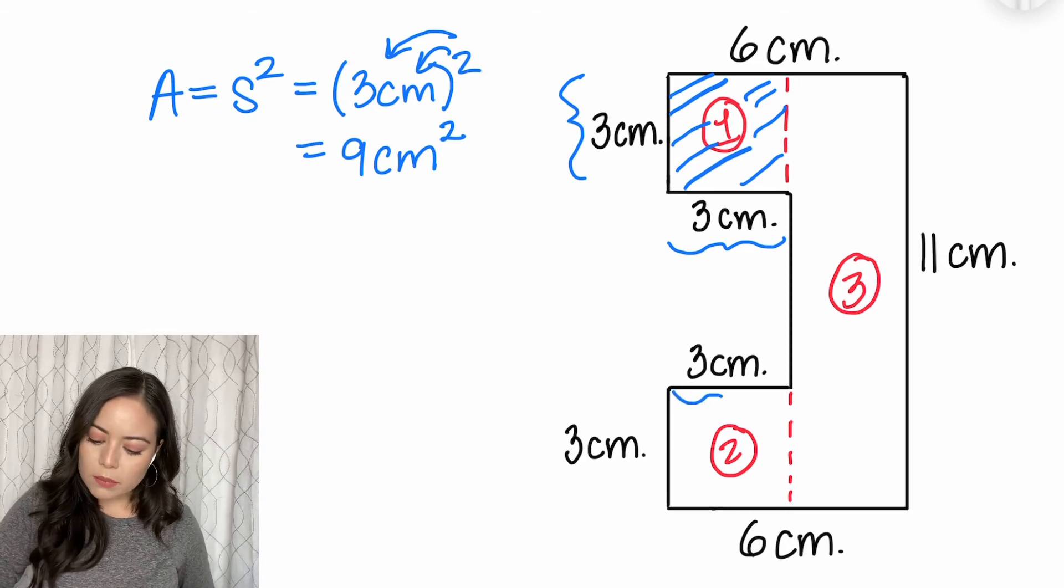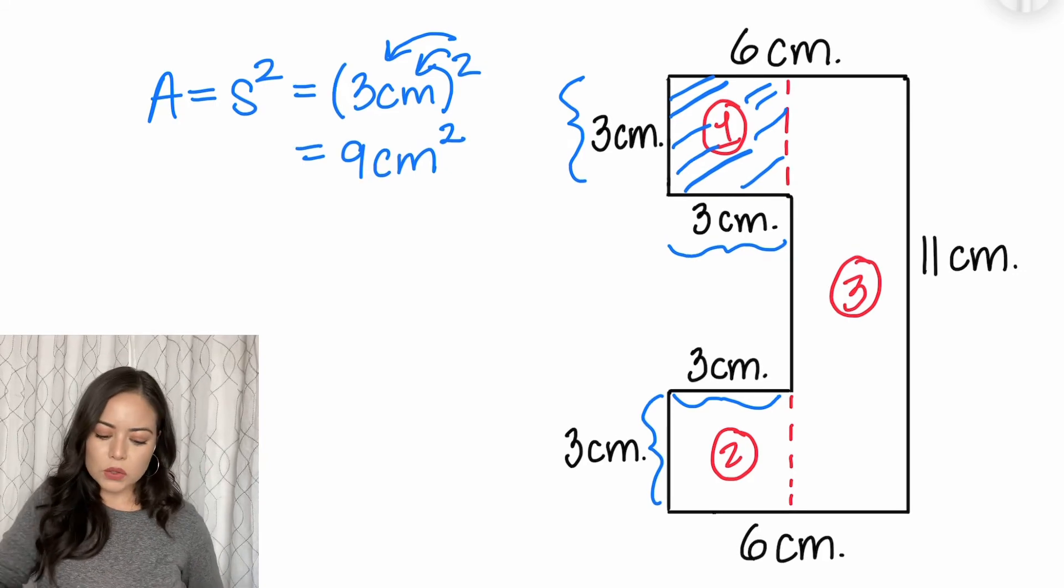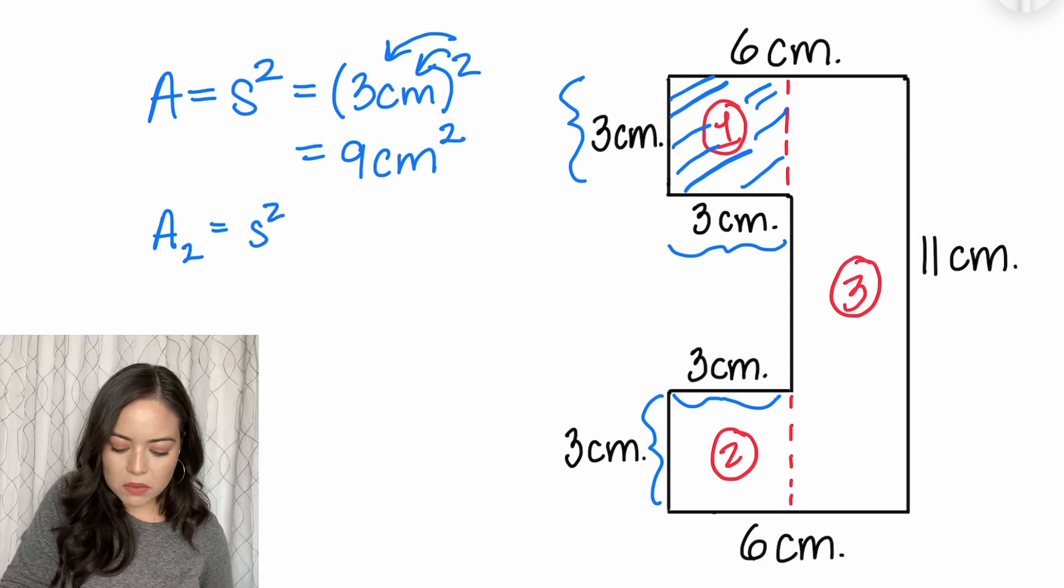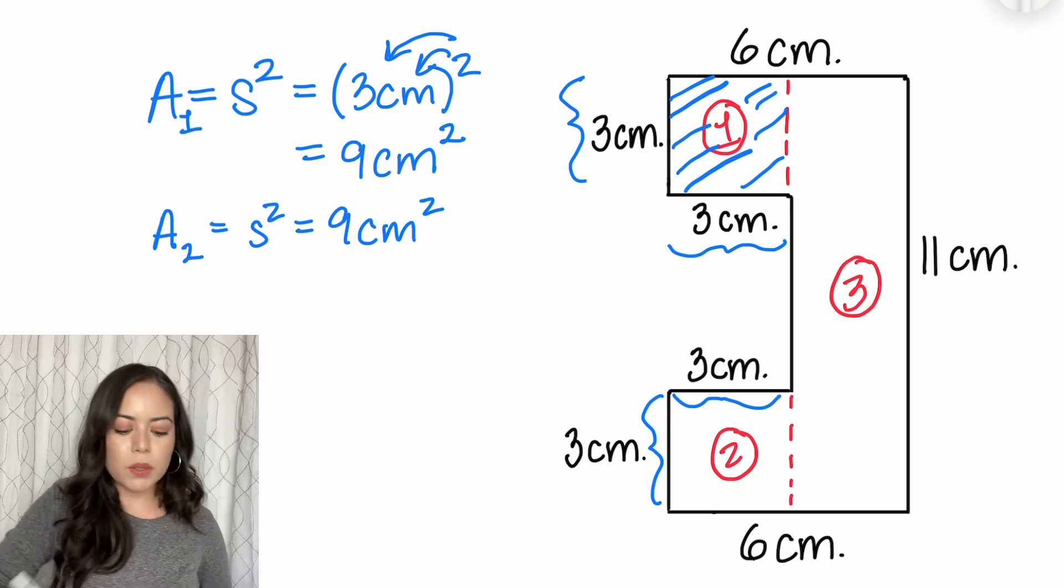I'm going to show you part two. So part two also has dimensions three by three, which is the exact same as part one. So I'm going to label area sub two, because that's part two. Same thing. It's going to be nine centimeters squared. And I'm going to name the first part a sub one.